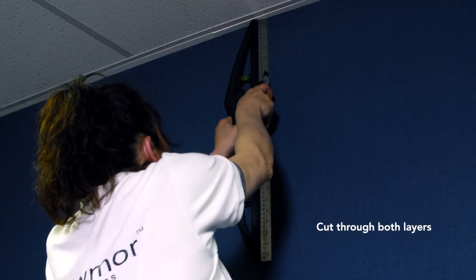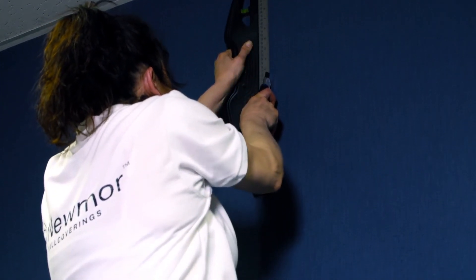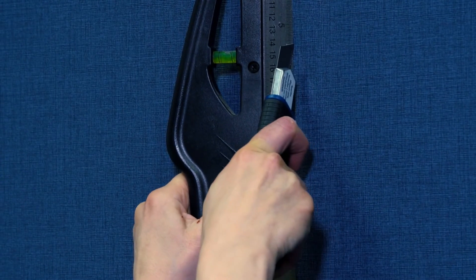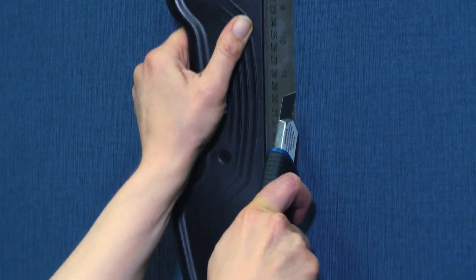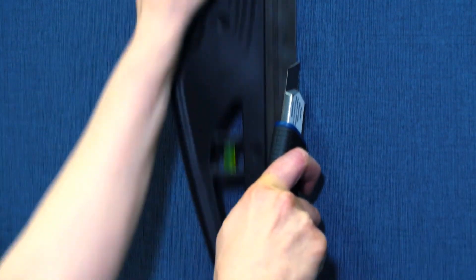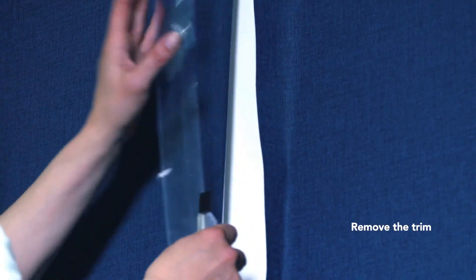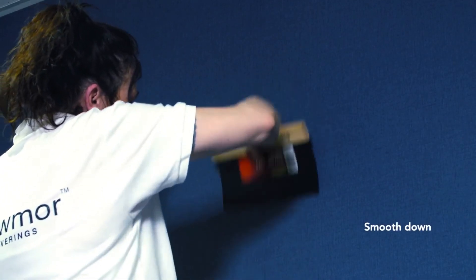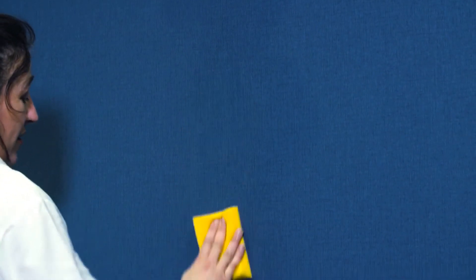Cut through both layers using a straight edge as a guide. Remove the excess material and smooth down to create a perfect seamless join.